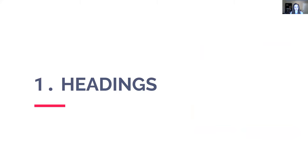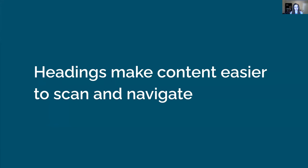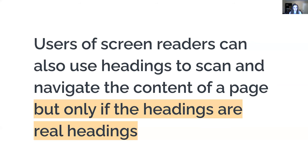Now we'll talk about specific tips to make content accessible, starting with document structure and headings. The first step is to use real headings to organize your content. Headings make content easier to navigate — rather than looking at a wall of text, headings help us find what we're looking for. Users of screen readers can also use headings to scan and navigate a page, listening to a list of headings and jumping between sections. But this only works if the headings are real, or tagged headings.